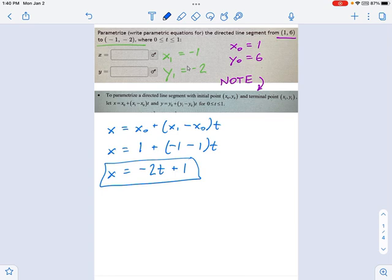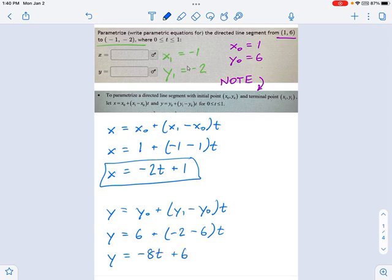And now, we're going to do the same thing for y. I'm going to take my equation, y equals y0 plus y1 minus y0 times t. And now, we plug in the numbers we know. So, y0 is 6 from earlier. y1 is negative 2. y0, I just said it, is 6 times t. So, this becomes y equals negative 8t plus 6. So there are your two equations in parametrized form.